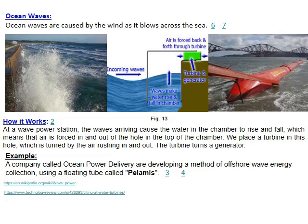Wave energy is generated when wind blows across water, creating waves. These waves can be harvested in different ways. One method uses a snake-like or zigzag wave energy converter with a turbo-generator that moves with the waves to generate electricity. Scotland is one country investing in this technology.